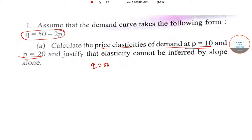So Q = 50 - 2P, therefore dQ/dP = -2. If you put P = 10, Q = 50 - 20 = 30. At P = 20, Q = 50 - 40 = 10.